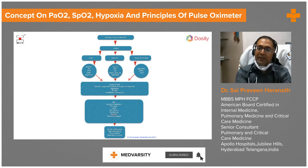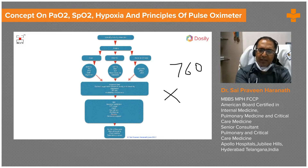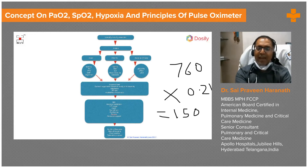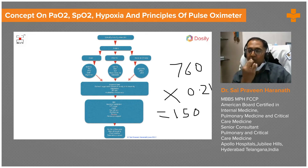When you have 760 millimeters of mercury, 21% of that gives you 0.21 × 760. If you have a fast brain, you'll tell me that answer is about 150. So 150 mmHg is the actual partial pressure of oxygen at your mouth.